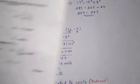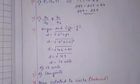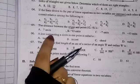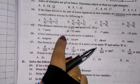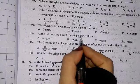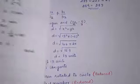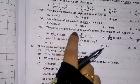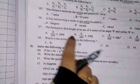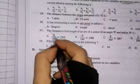Next question: a line intersecting a circle at one point is nothing but a tangent. So the correct answer is tangent. Question number 7 is from the reduced portion — 30% of the syllabus was reduced due to COVID-19.